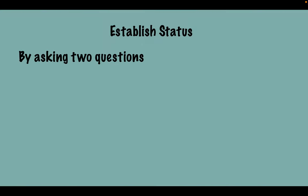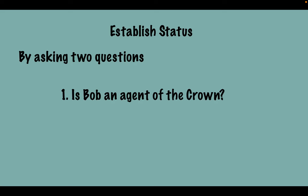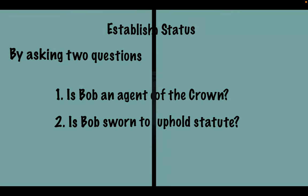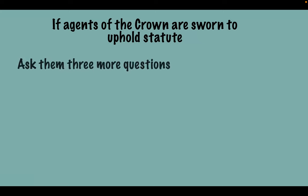This is how we establish our status, simply by asking two questions. First: is Bob an agent of the Crown? If he's an agent of the Crown, that makes us the principal — we've established it. Second: is Bob sworn to uphold statute? He is, and therefore whatever statute we point him to he must uphold it. So now that we've established our status, we will point to the statute we're asking Bob to uphold. Three more questions and it's all over.